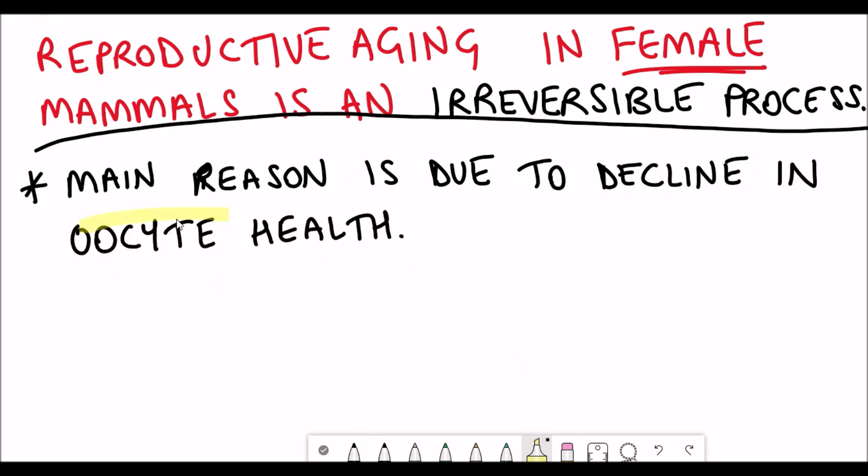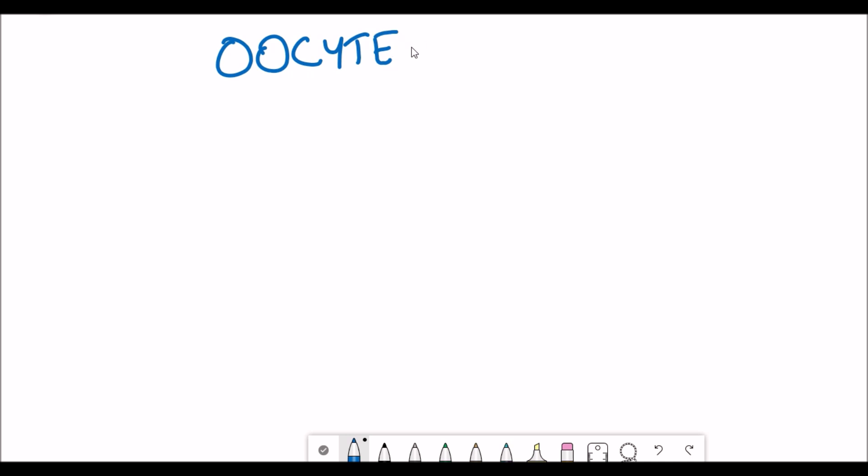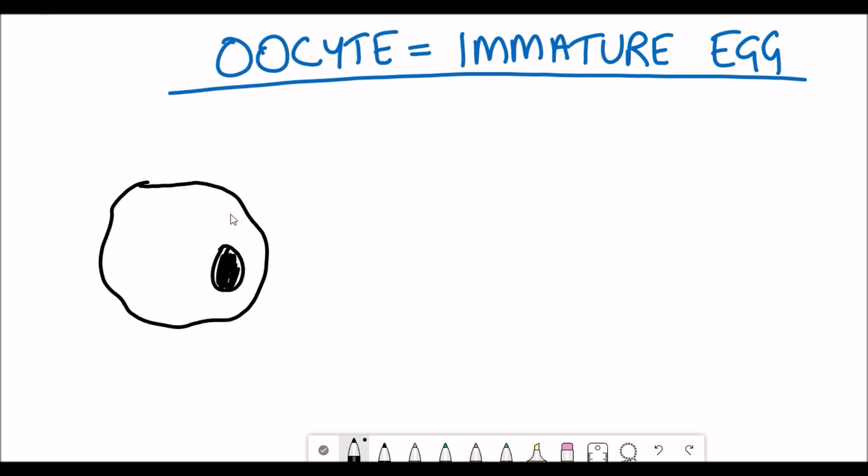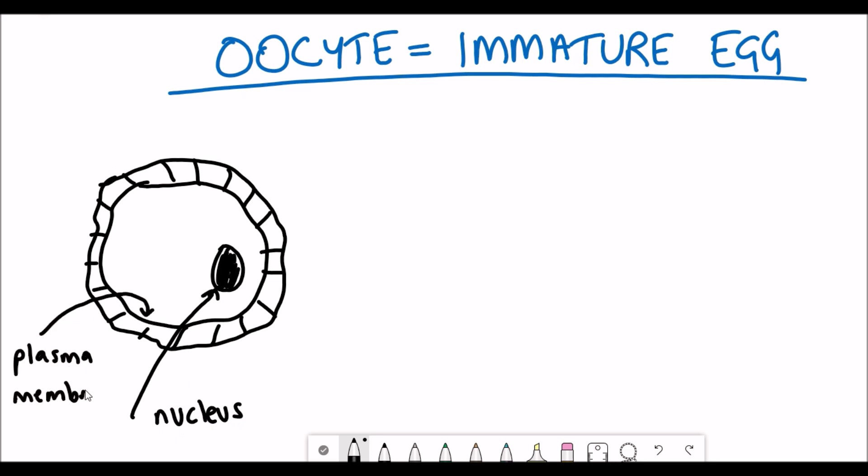So what actually is an oocyte? An oocyte is, the simple way to think about it, an immature egg. If I draw out an oocyte here, we can see it looks like a cell - it's got a nucleus, cytoplasm, plasma membrane, and is surrounded by what's referred to as the corona radiata.